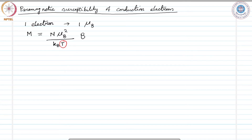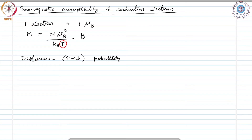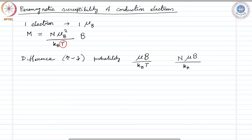If we consider the probability of an atom lined up parallel to the external magnetic field and the probability of antiparallel orientation, the difference in probability can be given as μB over k_B T. If we have n number of atoms per unit volume, then the net magnetization becomes n μB over k_B T.